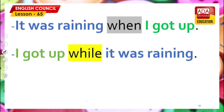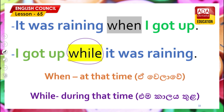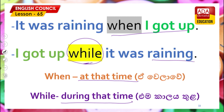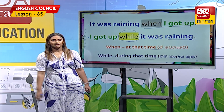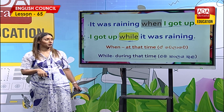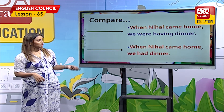'I got up while it was raining.' During that time, at that time — this is what the simple past technique shows. The 'while' clause becomes important here. So we were talking about this and we had a few examples as well.